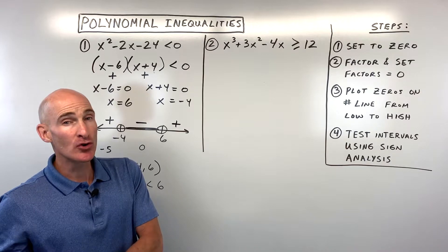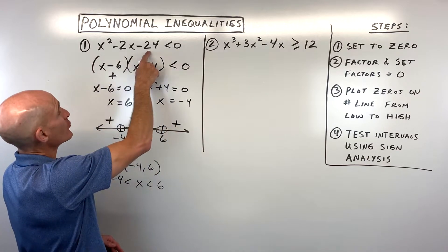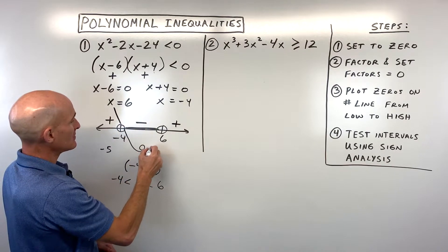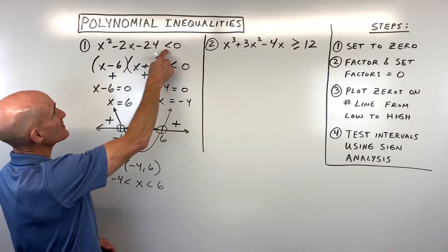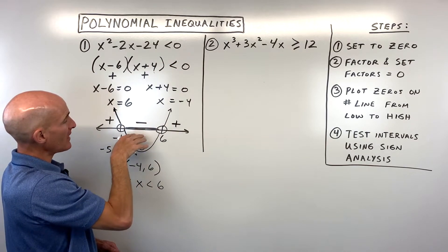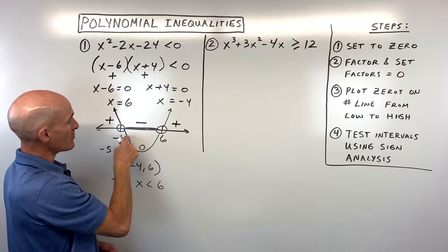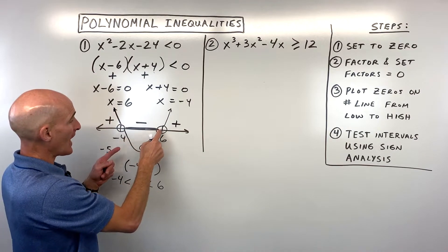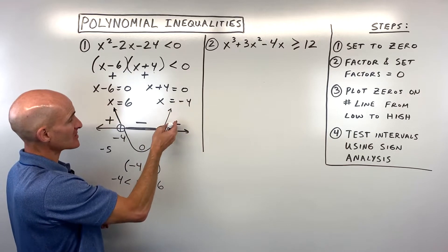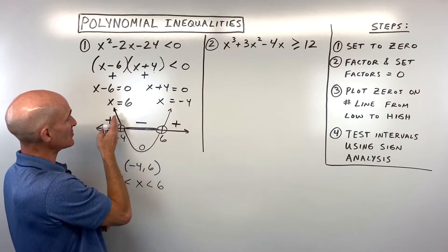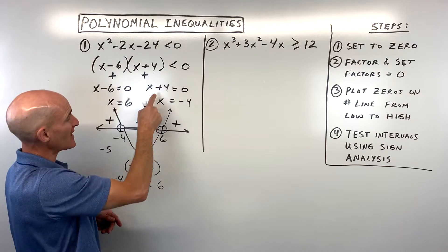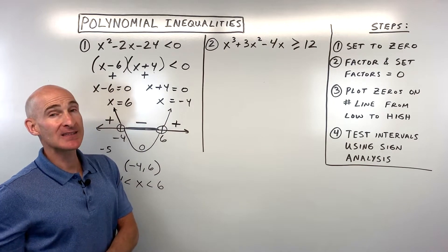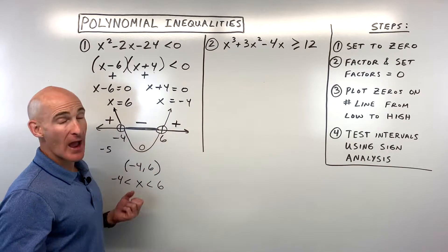You could actually graph this parabola to verify. We're looking for where it's less than 0 — below the x-axis — which is between negative 4 and 6. It equals 0 at negative 4 and 6, and is above the x-axis to the right of 6 or to the left of negative 4. The number line method is just a quicker way than graphing the whole parabola.